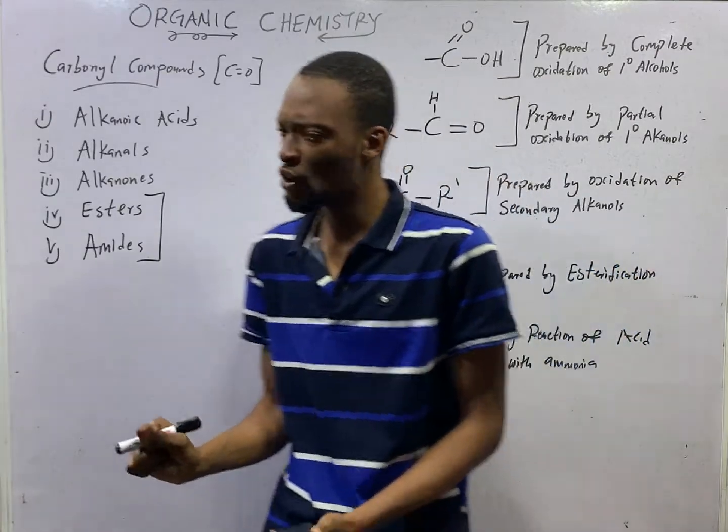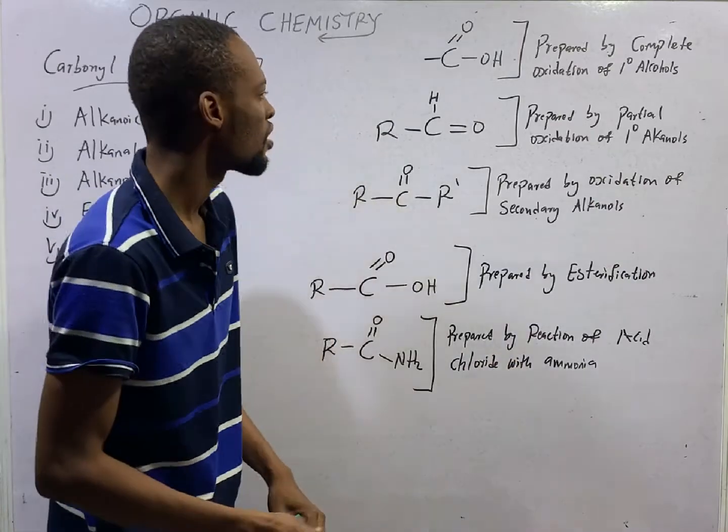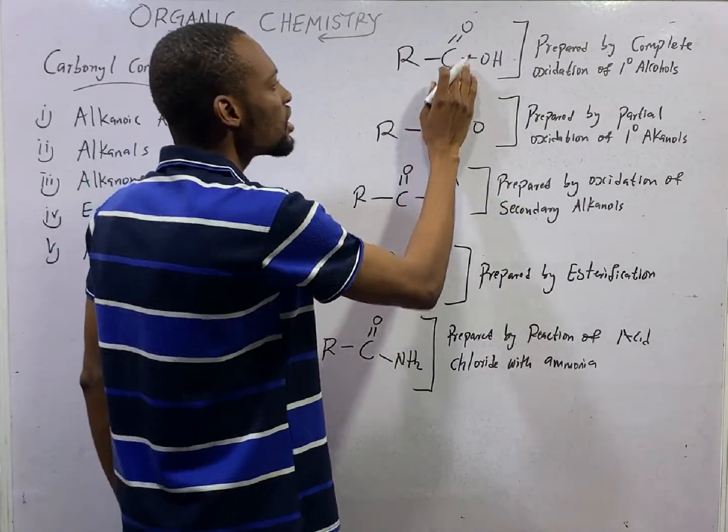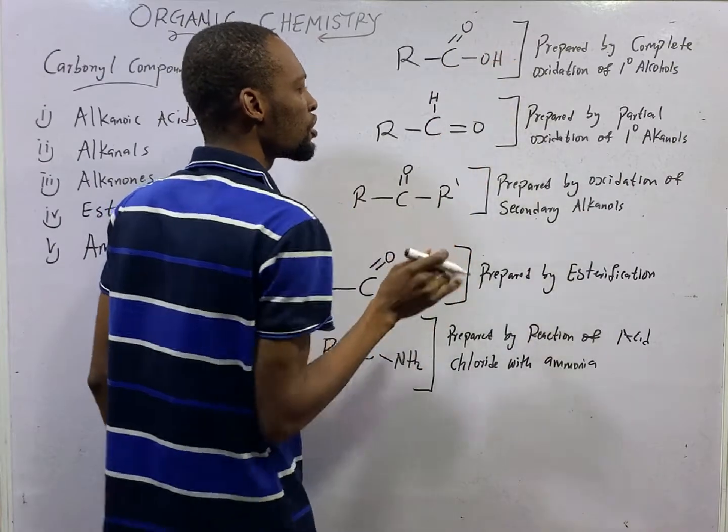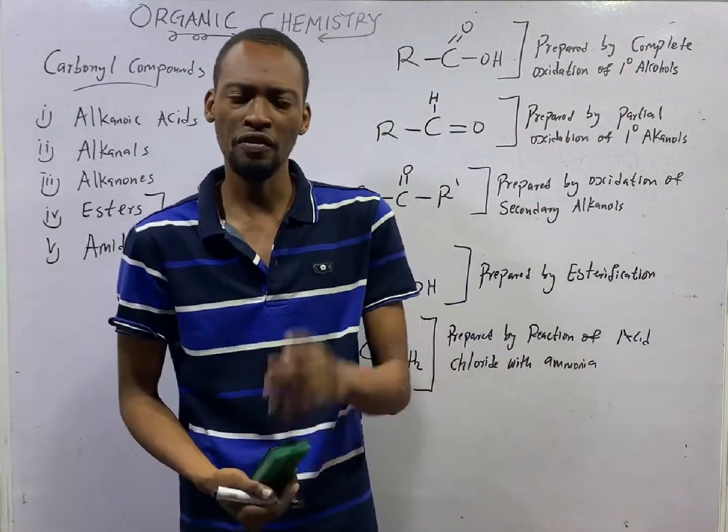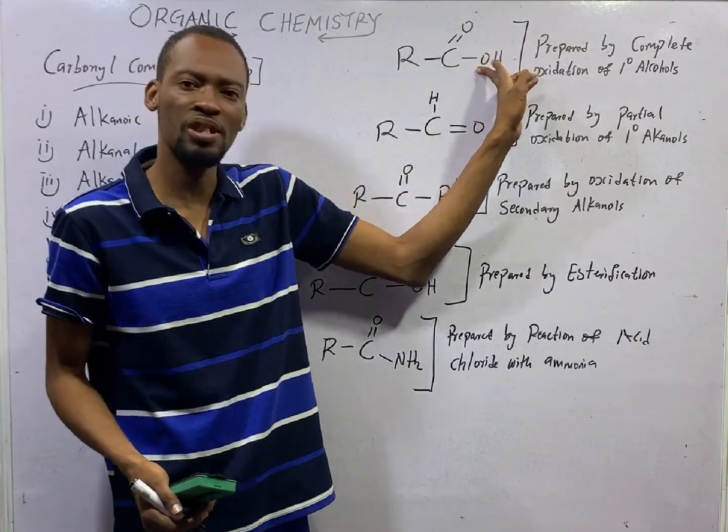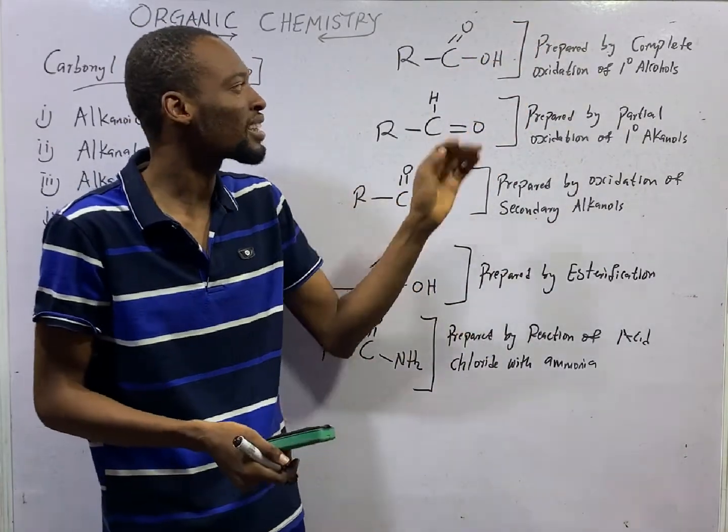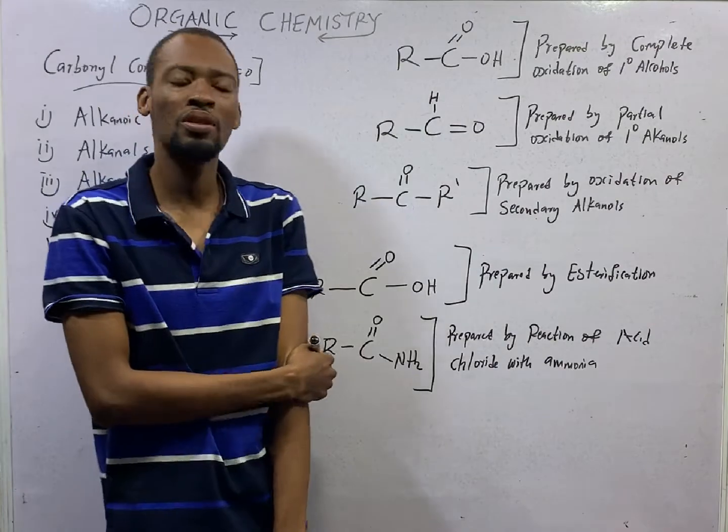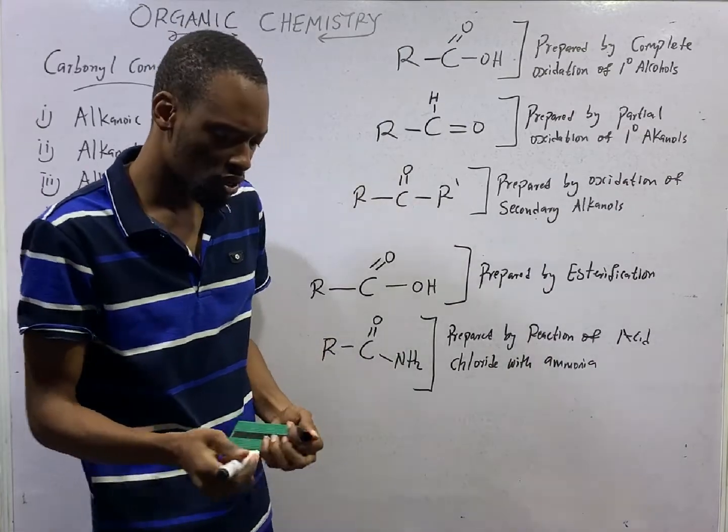Let's take a look at the functional group of alkanoic acid or carboxylic acid. For acids, you obviously have an alkyl group, then this is the functional group, C double bond to O and bond to OH. If you look at alkanoic acid, you agree with me that they have two functional groups. So, they have the carbonyl functional group and they have the hydroxyl functional group. JAMB may ask, which of the following compounds have two functional groups? Carbonyl alkanoic acids definitely have two functional groups.